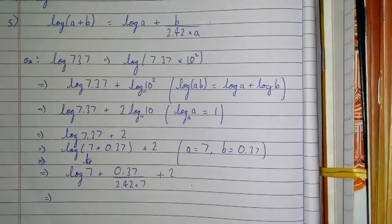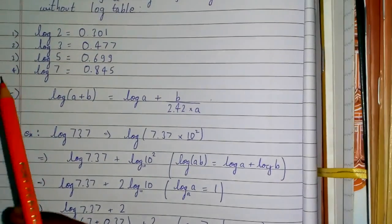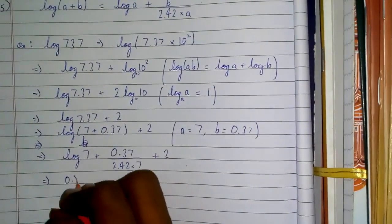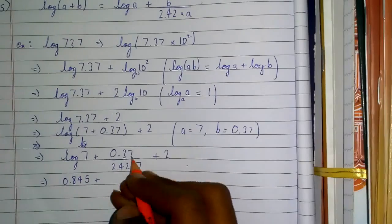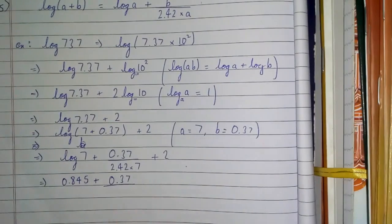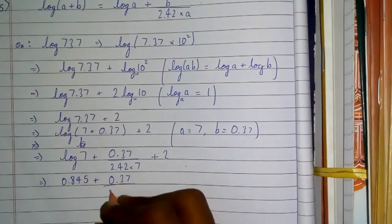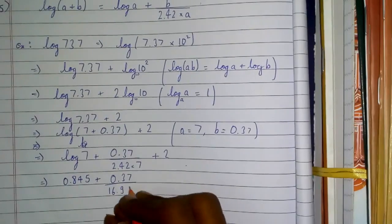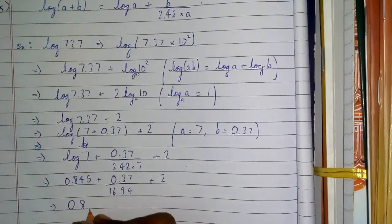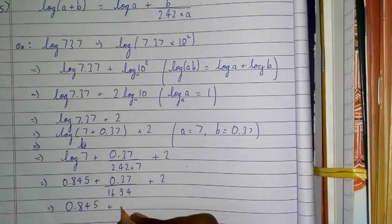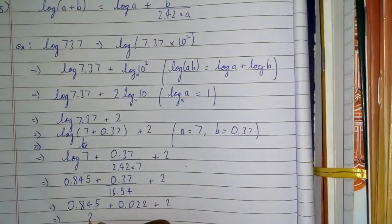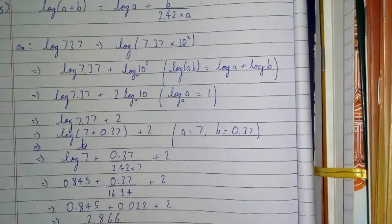Now we know the value of log 7, which is 0.845. So we substitute: 0.845 + 0.37/(2.42×7) = 0.845 + 0.37/16.94 + 2, which equals 0.845 + 0.022 + 2, giving us 2.866.